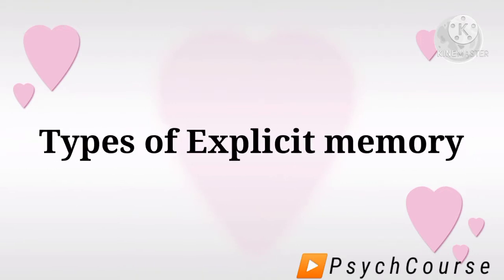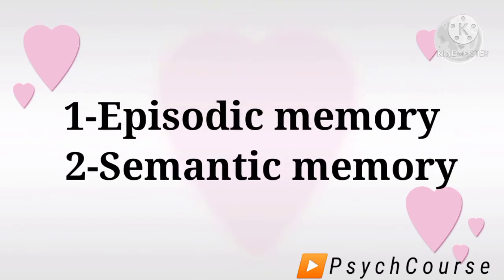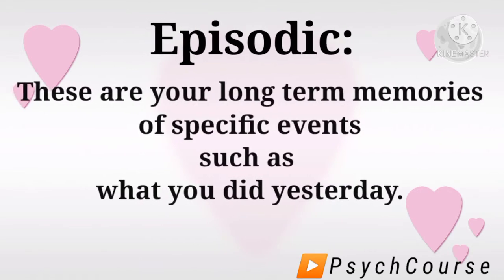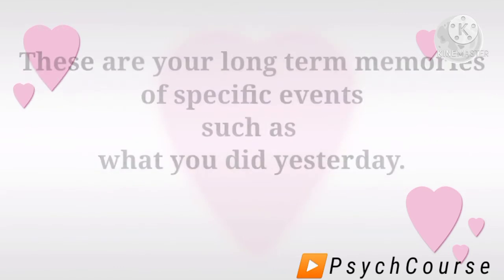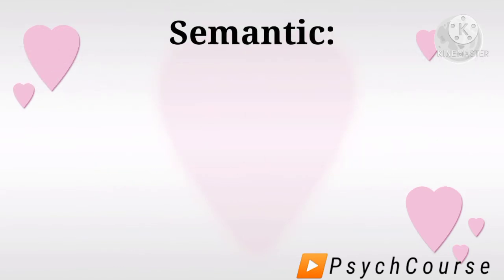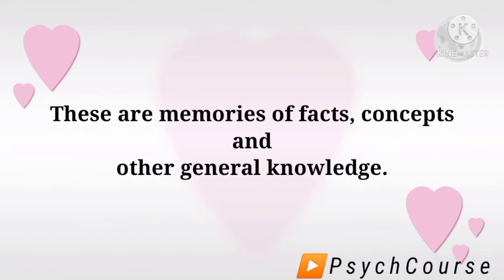Types of explicit memory: episodic memory and semantic memory. Episodic memory — these are your long-term memories of specific events, such as what you did yesterday. Semantic memory — these are memories of facts, concepts, and other general knowledge.